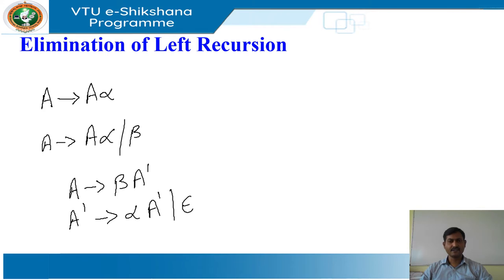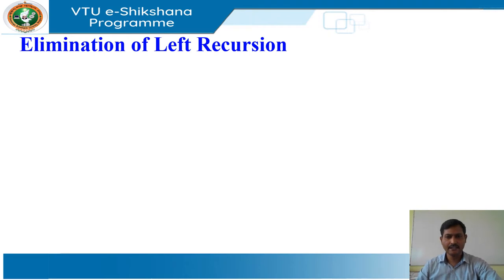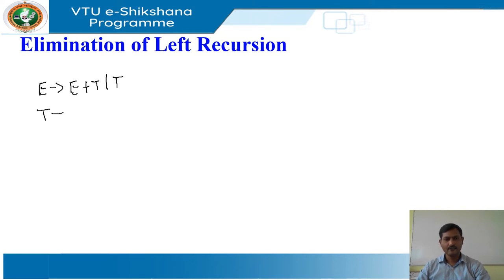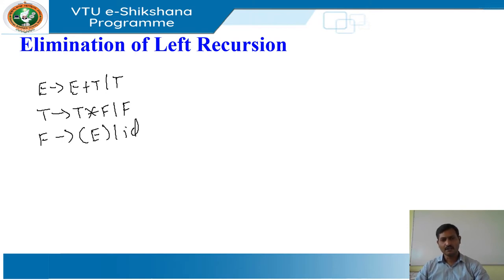This rule by itself suffices for many grammars. Consider the expression grammar: E derives E plus T | T, T derives T star F | F, F derives parenthesized E | id. This grammar contains left recursion. The non-left recursive expression grammar is obtained by eliminating the immediate left recursion from the expression grammar.